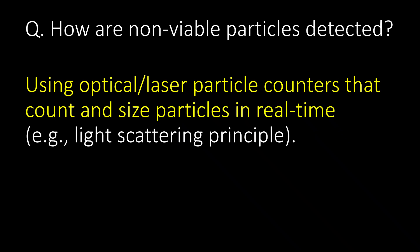How are Non-Viable Particles detected? Non-Viable Particles are detected using optical or laser particle counters that count and size particles in real time, e.g. using the Light Scattering Principle.